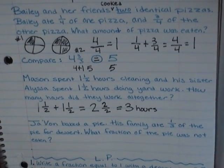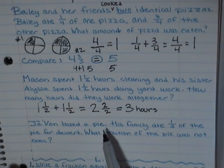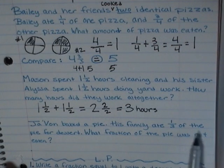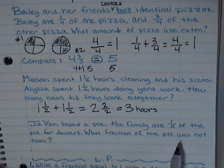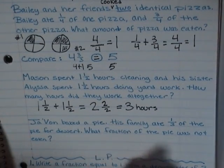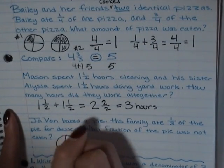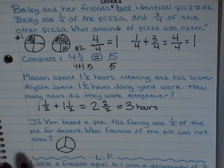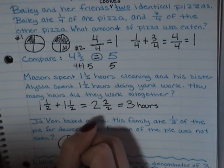Alright, and this is the last and final example before your lesson practice. Javon baked a pie. His family ate one third of the pie for dessert. What fraction of the pie was not eaten? Hmm. This one is a little tricky. So if I have one whole pie, I am going to draw a circle for this. And I divide it into three equal pieces.